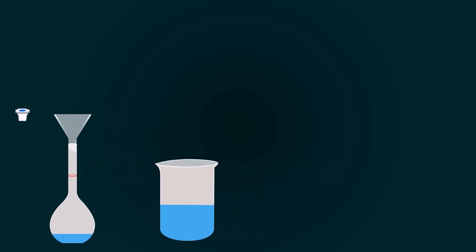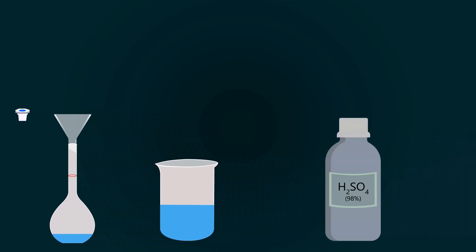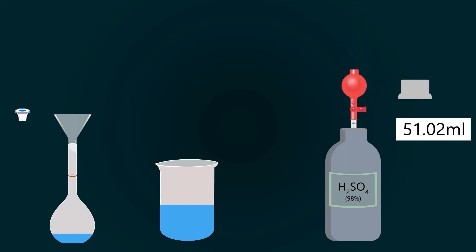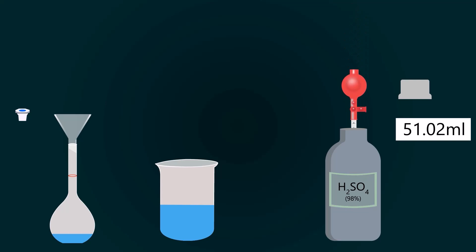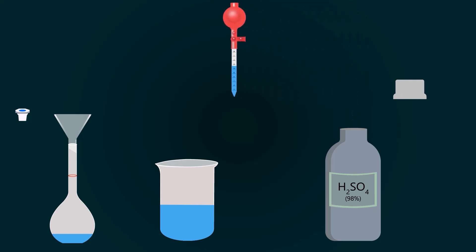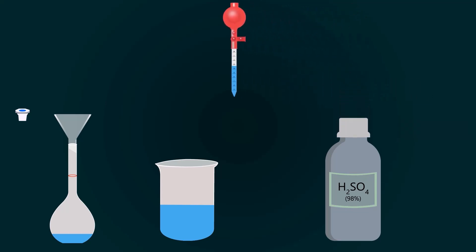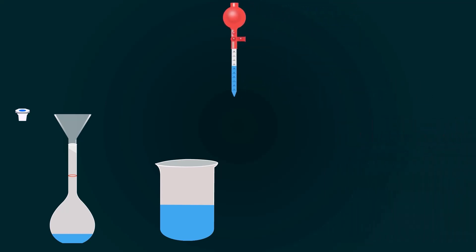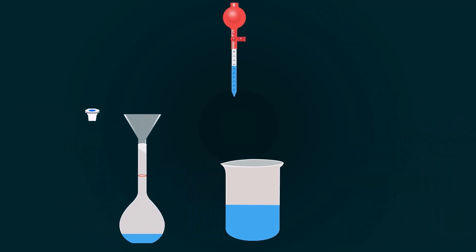Now take the bottle of 98% H2SO4. Open the lid and pipette out the required volume, which is 51.02 ml. Now pour this into the volumetric flask.